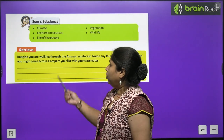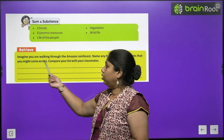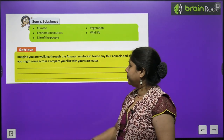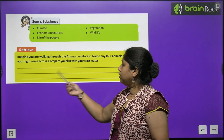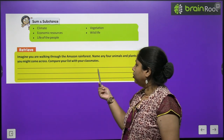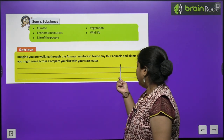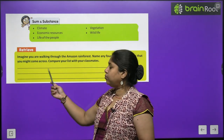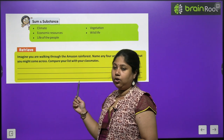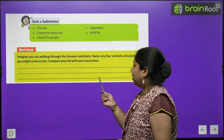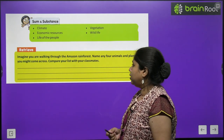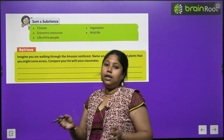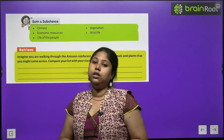Now let's go through this retrieve exercise. Imagine you are walking through the Amazon rainforest. Name any 4 animals and plants that you might come across. Compare your list with your classmates.